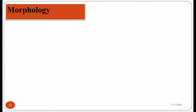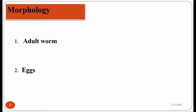Discussing the morphology of adult male and female worms of Enterobius vermicularis: in most worms, male worms are comparatively smaller in size than adult female worms — the same applies here. After mating with the male worm, the female lays eggs. The egg produced by the adult female worm is different from other worms. The shape of the egg of Enterobius vermicularis can be defined as plano-convex.